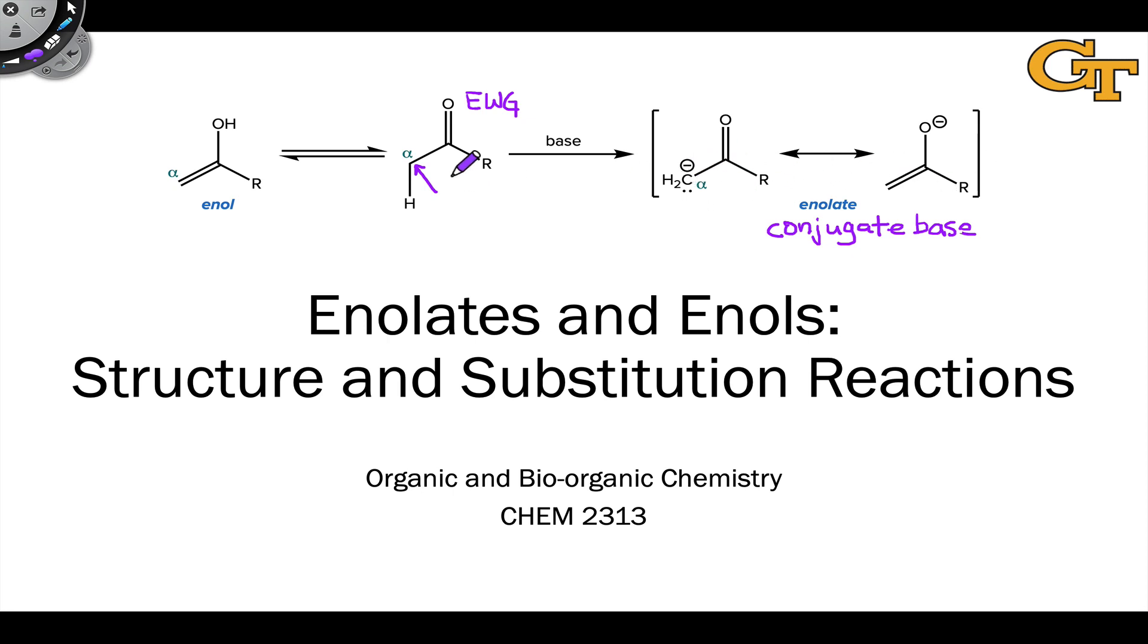The enolate is resonance stabilized. This is part of the reason the alpha position is acidic at all. It consists of, in one resonance form, a carbon-carbon double bond adjacent to an anionic oxygen, and in the other resonance form we have a carbon-oxygen double bond adjacent to an anionic carbon atom.